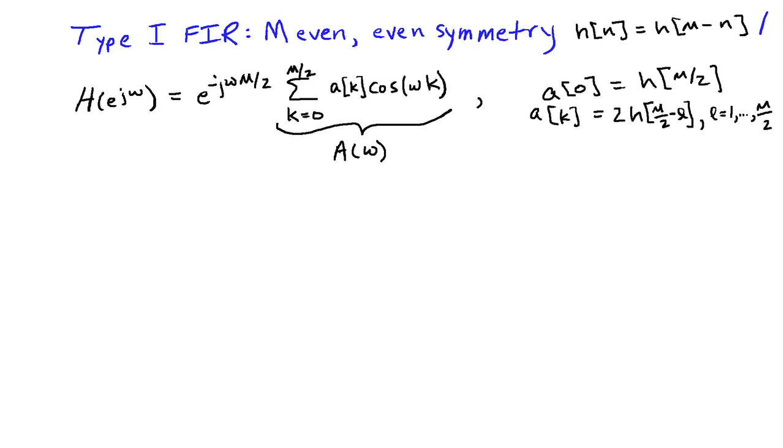So we're going to start with the type 1 FIR filter, which recall had M even. The impulse response started at time 0 and went through length M, H of M, and it also had even symmetry. So we had the condition that H at time N was equal to H at M minus N.